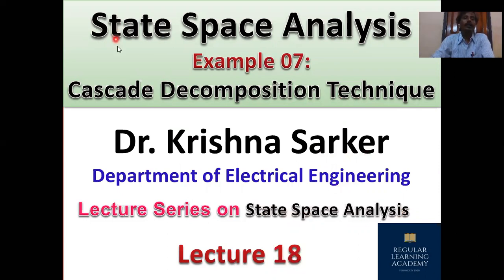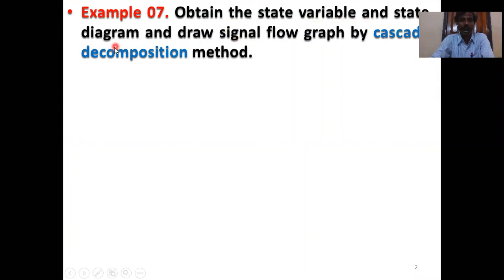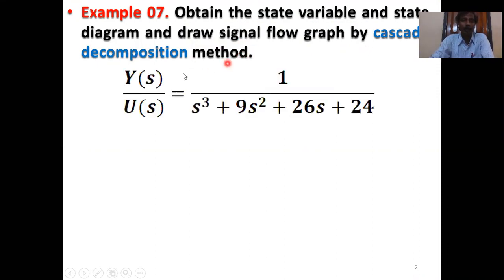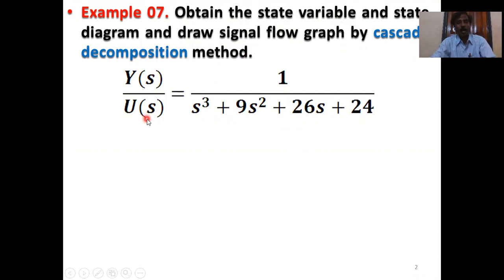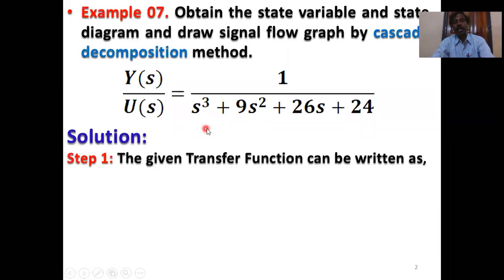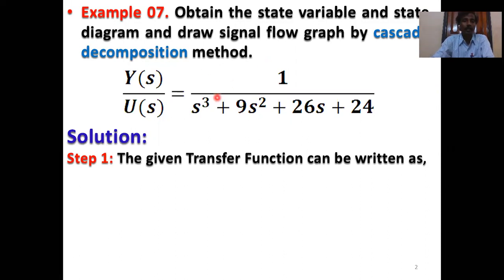Our topic is State Space Analysis, Example 7 — Cascade Decomposition Technique. The problem: Obtain the state variable, state diagram, and draw the signal flow graph by Cascade Decomposition Method. The transfer function is Y(s)/U(s) = 1 / (s³ + 9s² + 26s + 24), where Y(s) is the output and U(s) is the input. Calculate the state equations, state matrix, state diagram, signal flow graph, and stability of the system.